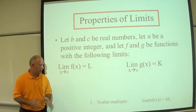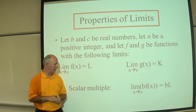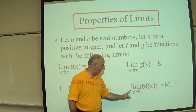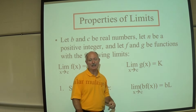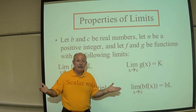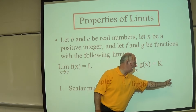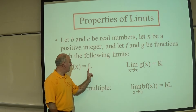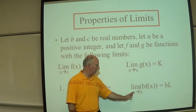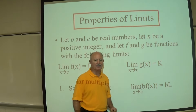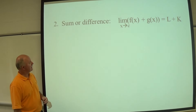The first is the scalar multiple property: the limit as X approaches C of B times F of X equals B times L, where L is the limit of F of X as X approaches C. So you simply multiply the function's limit by that scalar multiple.